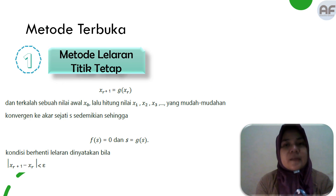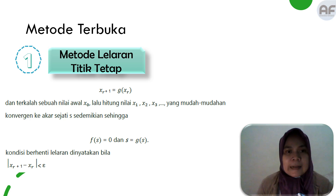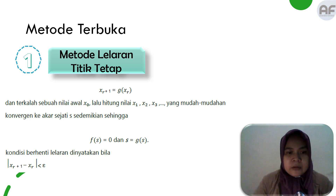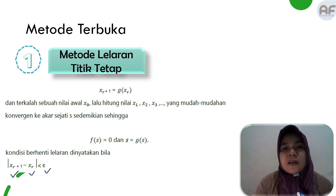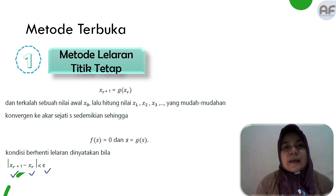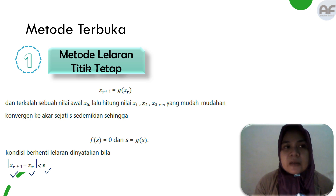Sama halnya seperti metode tertutup sebelumnya, untuk metode terbuka jenis lelaran titik tetap ini berhenti ketika lelarannya sudah kurang dari epsilon, yaitu |x_{r+1} - x_r| < epsilon. Kriteria pemberhentian ini sama seperti di metode bagi dua dan metode regula falsi.